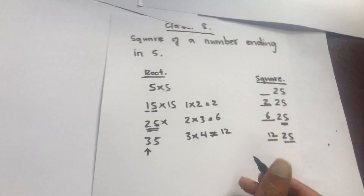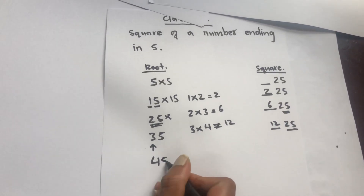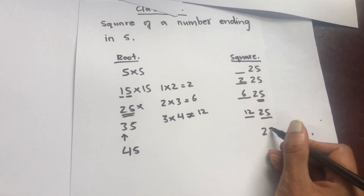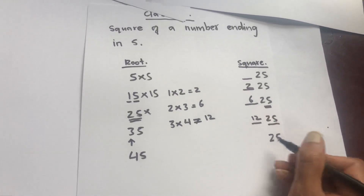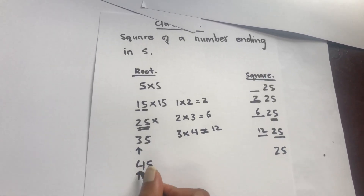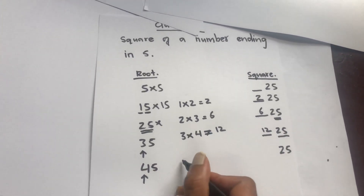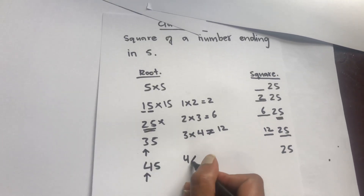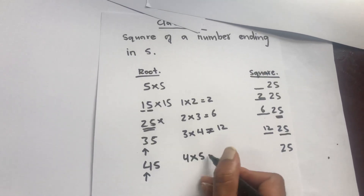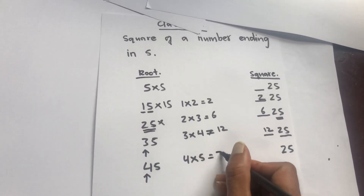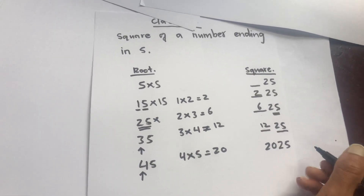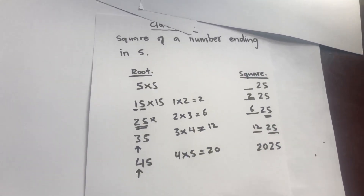Similarly, for 45: the last two digits are 25. Find the number in front of 5, which is 4. Multiply 4 by one greater than 4, that is 5: 4 into 5 equals 20. So the number in front of 25 is 20, and 45 squared is 2025.